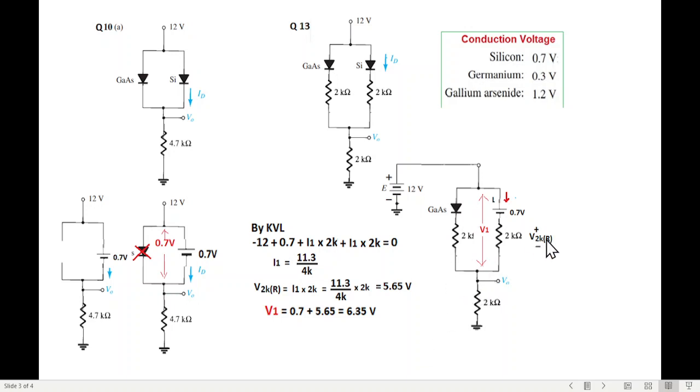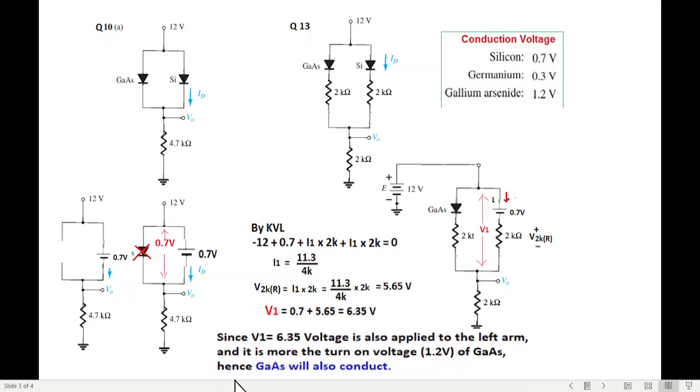Now is there any condition or this will always be valid? Let's see. Okay, here it is saying that since v1 is 6.3 volt is applied to the left arm also, and it is more than the turn on voltage 1.2 of gallium arsenide, gallium arsenide will also conduct.